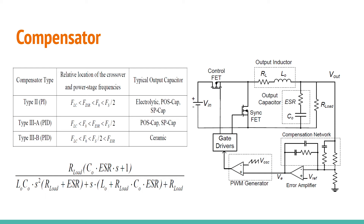Here is the transfer function of the power stage. Assuming we are using ceramic capacitors, we will need to find the location of certain frequencies in order to determine what type of compensator to use. Here is a useful table showing how to decide. For this system to be stable, the phase needs to be under 360 degrees while the gain is above 1 or 0 dB. Although positive phase margins are considered stable, lower phase margins mean that you will have a ringing in your loop.